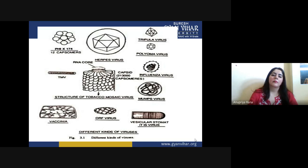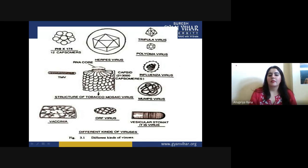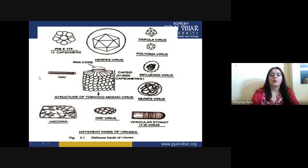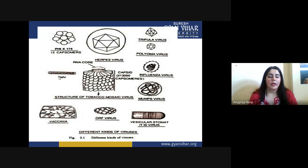You can see the shape here — this is a herpes virus; you can count its 12 faces. The polio virus and polyoma virus are also shown as spherical viruses. This is our tobacco mosaic virus, which is like a rod-like or cylinder-like structure. TMV in the microscope appears as a long elongated rod-like structure. Vesicular stomatitis virus and bacteriophages come under the complex kind of viruses.